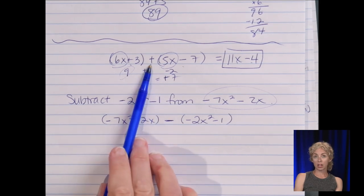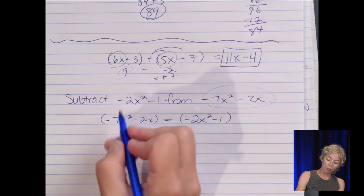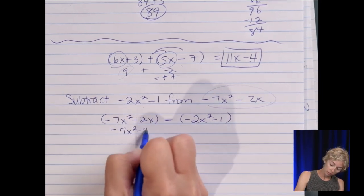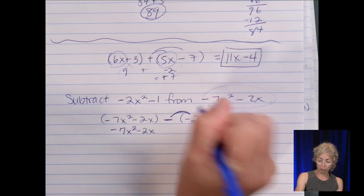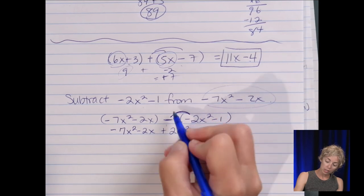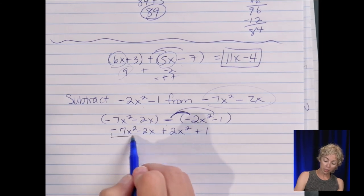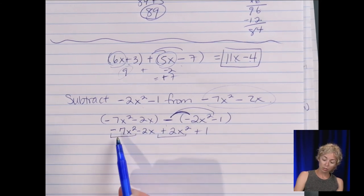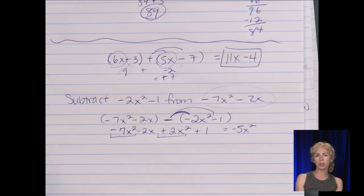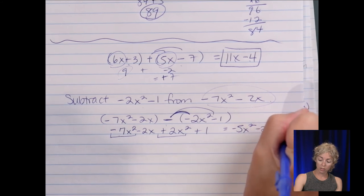With the addition sign you don't necessarily have to worry about distributing the positive through because it's not going to change signs. But rewrite the first one down and then distribute the negative through because negative times negative is positive. Negative times negative positive. The only like terms are these x squares so negative seven plus two is negative five x squared. And then I'm going to put it in standard form so the x term first then the one.